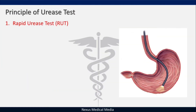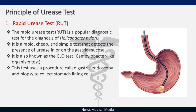The Rapid Urease Test is invasive and very popular in the diagnosis of H. pylori. It is a rapid, cheap, and simple test that detects the presence of urease in or on the gastric mucosa. It is also known as the Campylobacter-like organism test, or CLO.